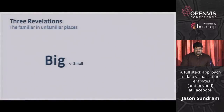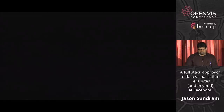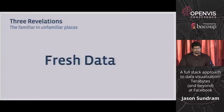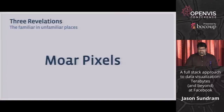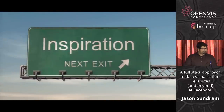First, all big data kind of has to become small data to be visualized — even a retina display only has five megapixels, which is sort of small. Second, what I'm calling the fresh data revolution — why real-time systems are really good for big data. And finally, if life hands you more data, consider using more pixels. I want to leave you feeling inspired and empowered to use some of these revelations in your own work.